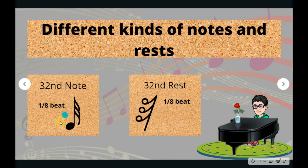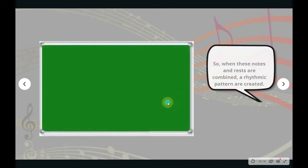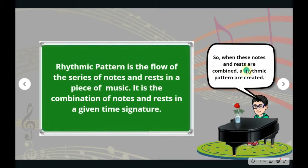You have the thirty-second note and thirty-second rest — that's one-eighth beat — and it's a little bit faster compared to the others. So when these notes and rests are combined, a rhythmic pattern is created. Once again, rhythmic pattern is the flow of the series of notes and rests in a piece of music. It is the combination of notes and rests in a given time signature.